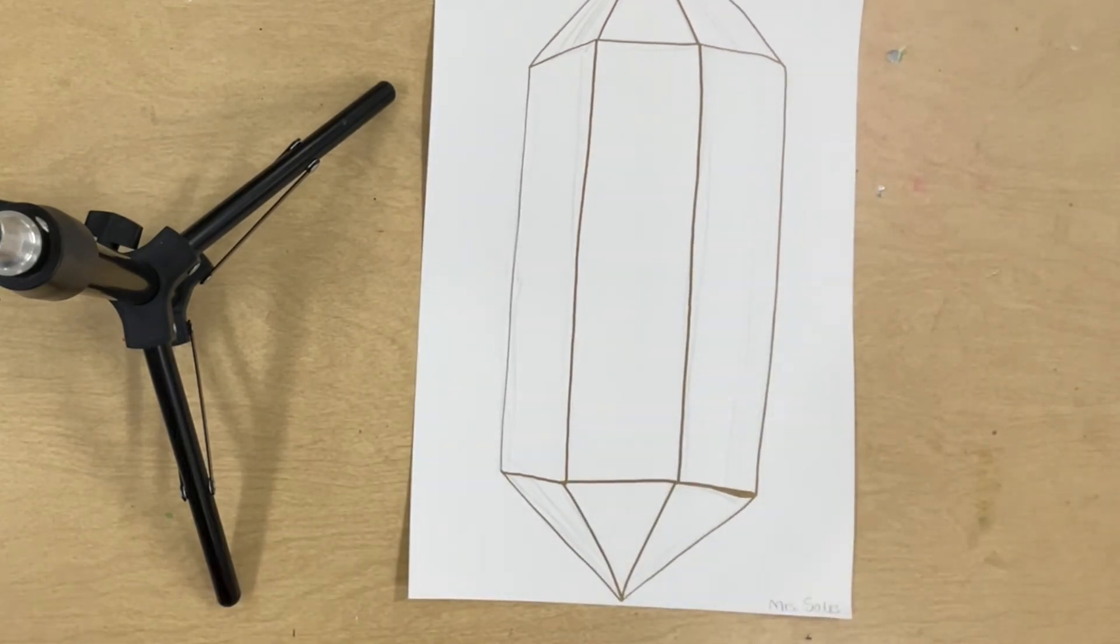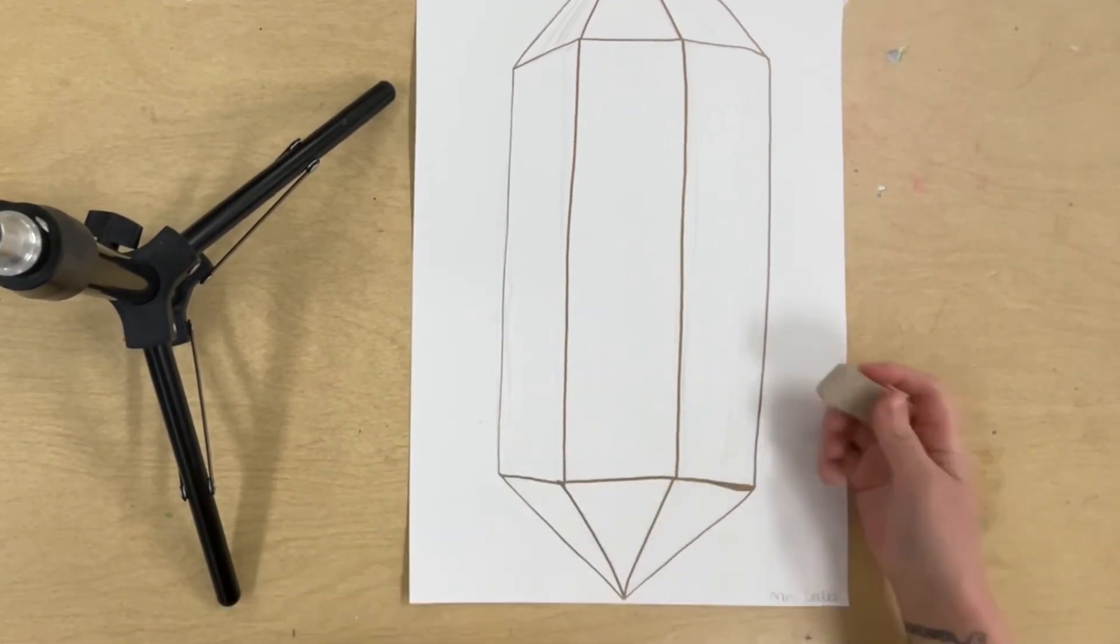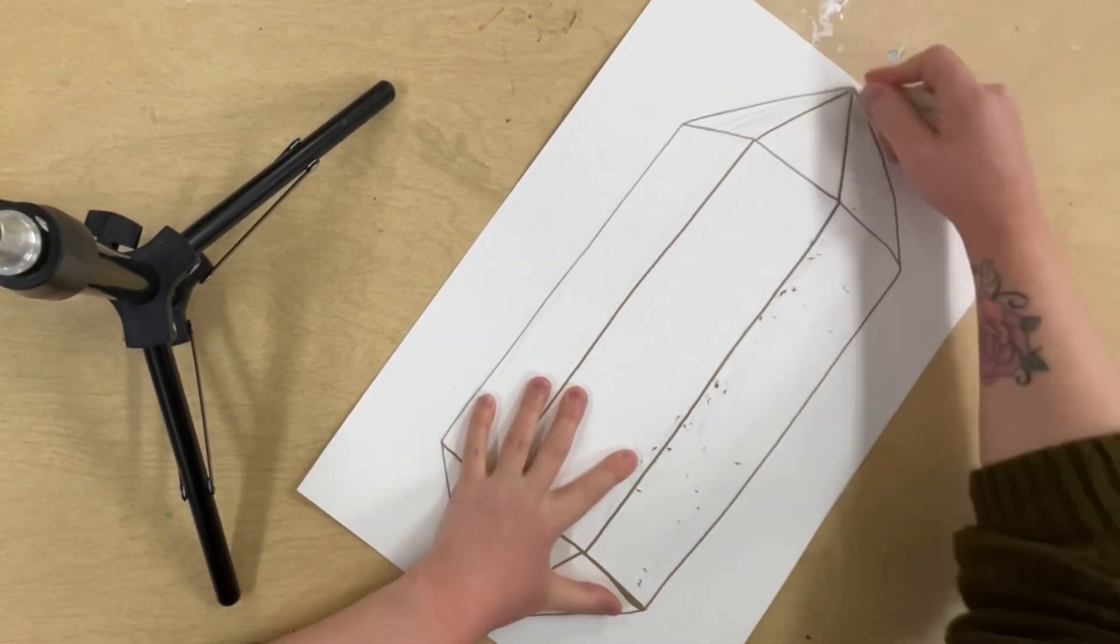Now that my gemstone is outlined with Sharpie, I'm just going to go in with an eraser and get rid of some of those pencil lines that are still showing through. This just cleans it up a bit.